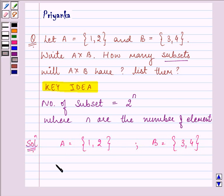First of all, let us find out A cross B. It will have ordered pairs where the first pair will be 1, 3.